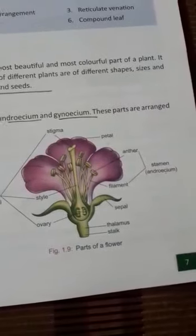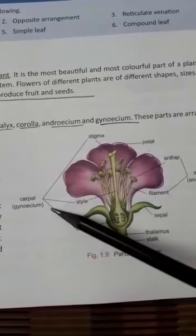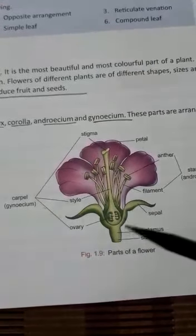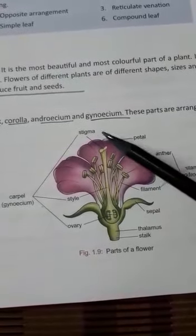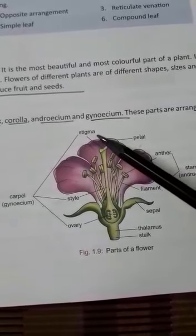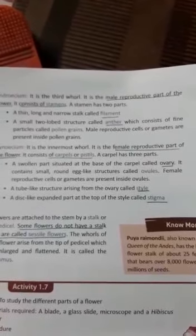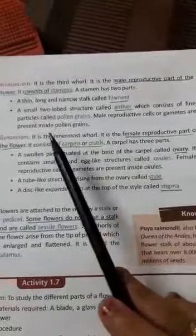Coming to the fourth part, that is gynoecium. Gynoecium is the female reproductive part of a plant. It consists of three parts: the ovary, the style, and the stigma.